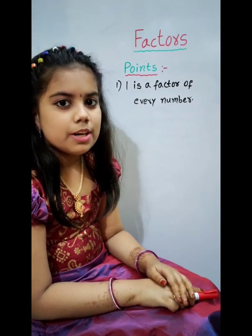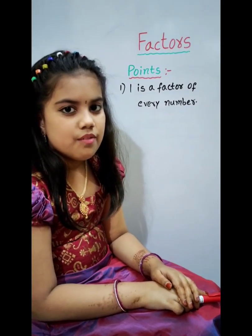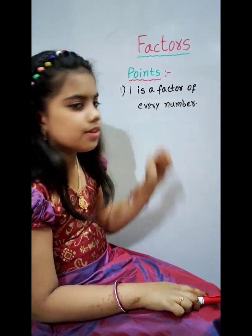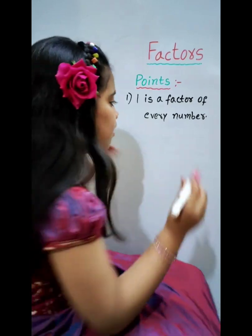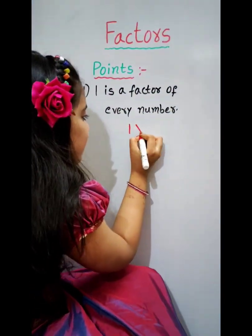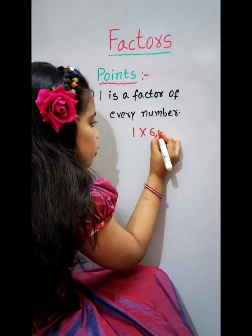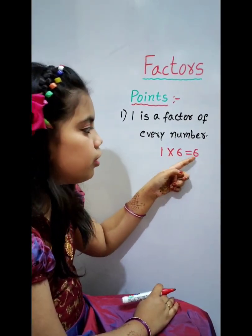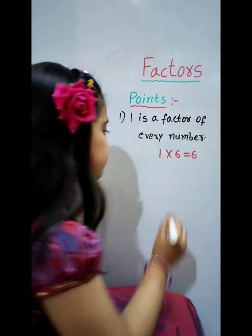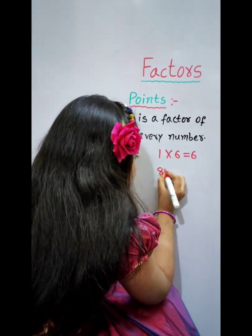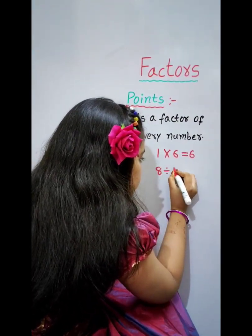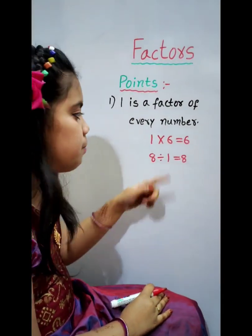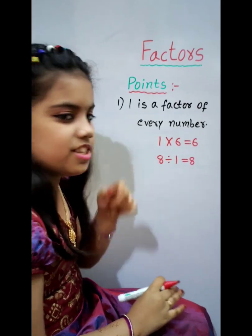There are some important points about factors. The first one is: 1 is a factor of every number. For example, 1 times 6 equals 6. 1 times any number equals the number itself.